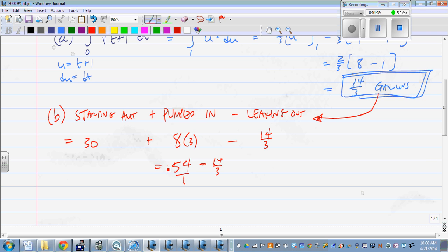Change this into a fraction over three, so we can multiply top and bottom by three. We get 162 over three, minus 14 over three, so we get 148 divided by three gallons.